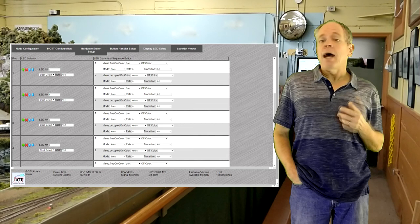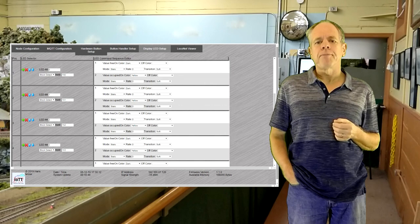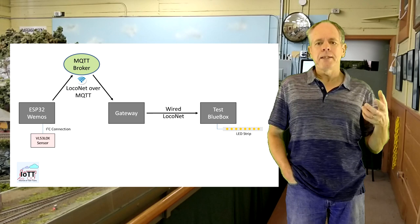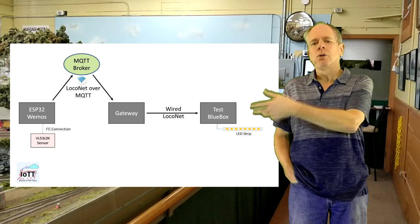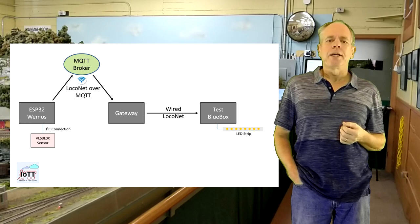If you want to play with it, as usual, you'll find all the code on my GitHub page for download. I then reconfigured my BlueBox test system to display the block detectors on the first few LEDs. As you may remember from video number 31, this system is hooked up to LocoNet. So for my test, I would use MQTT to send LocoNet detection messages to the broker, from there they would go to the gateway and to LocoNet, and finally they would be received by the BlueBox and displayed on the LED chain. Ready to go to test with the trains.